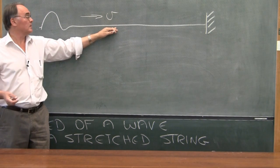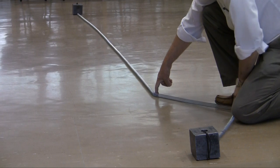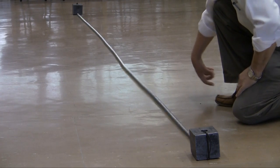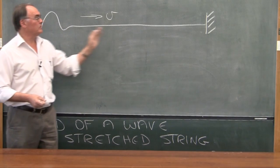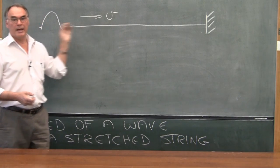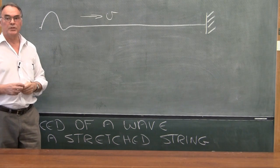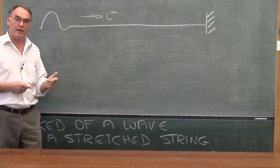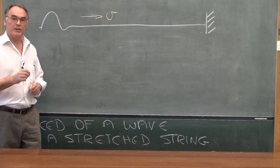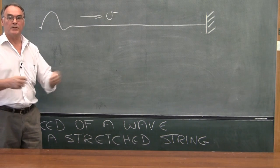If I put a pulse onto a long spring like this, the pulse will run down to the boundary and come back up again. Once again, the speed with which the pulse moves on the spring is determined by the properties of the spring: the tension in the spring as well as the mass per unit length.